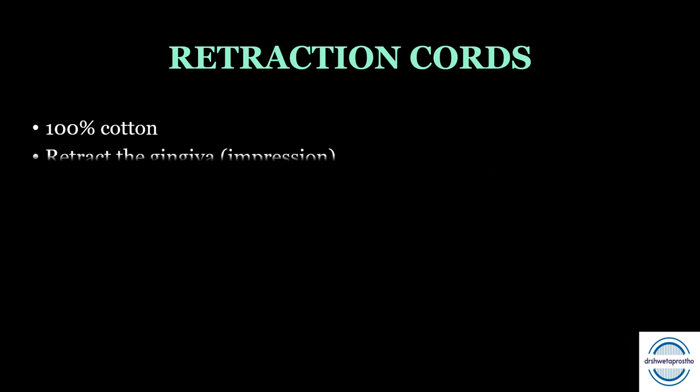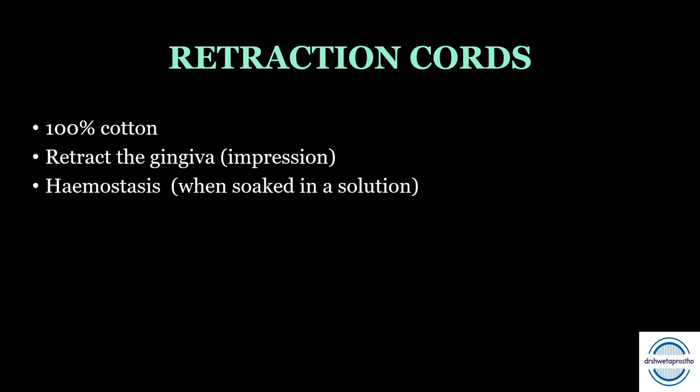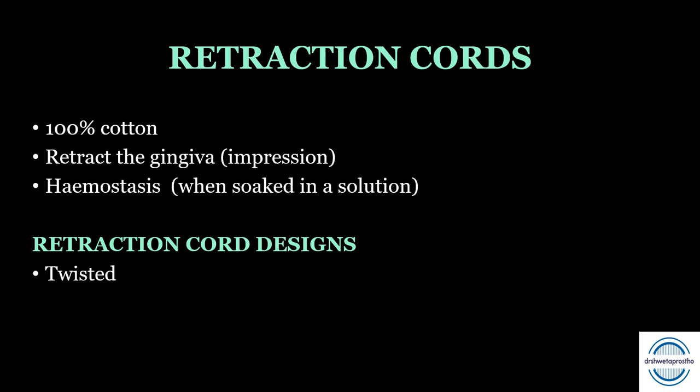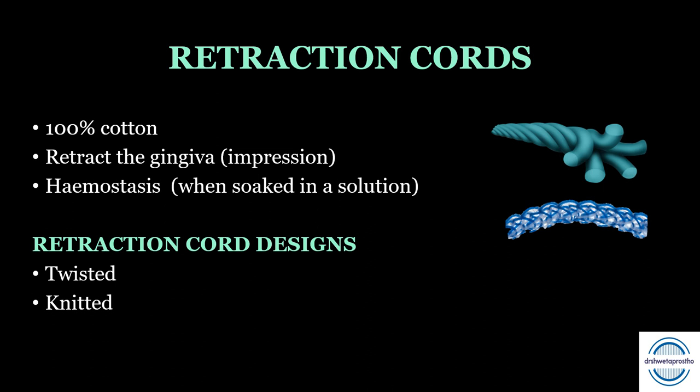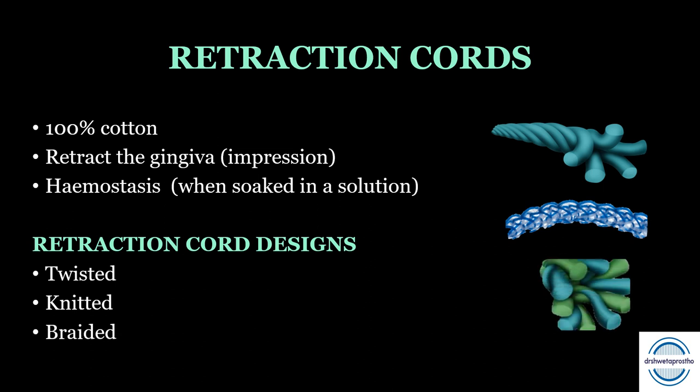Retraction cords are 100% cotton cords or threads which cause retraction of the gingiva. Used alone they cause physical displacement by mechanical means; when chemically treated — soaked in a solution — they also cause hemostasis, giving the advantage of fluid control. Regarding retraction cord designs, they can be twisted, knitted, or braided, designed so threads do not separate when inserted into the sulcus.